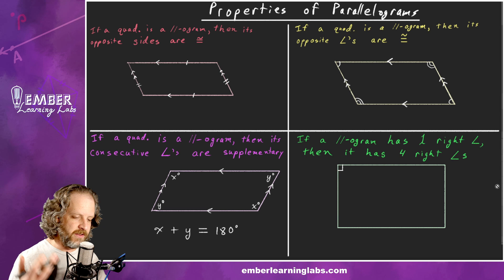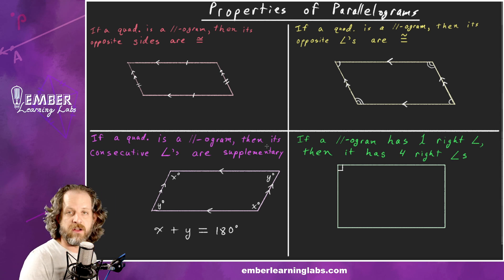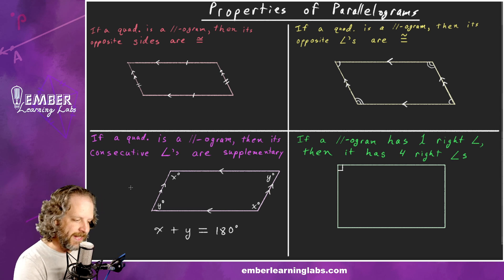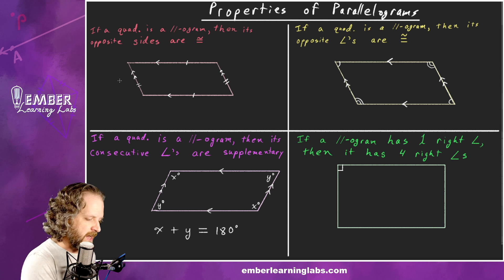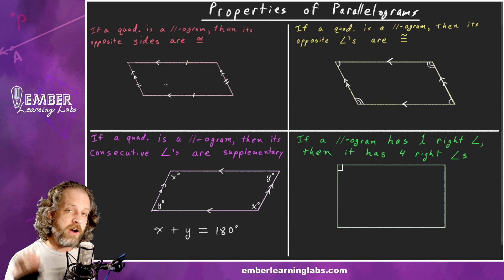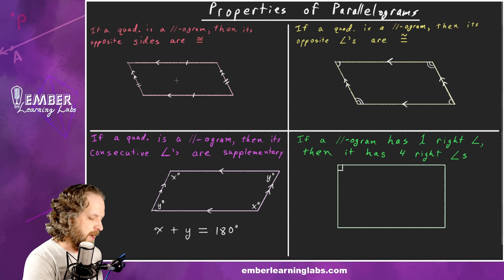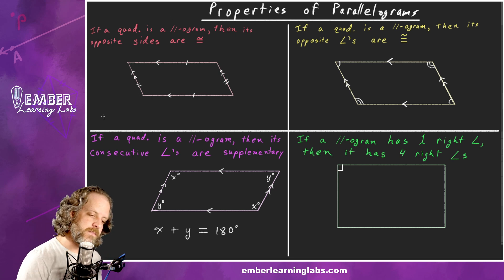Theorem 1: If a quadrilateral is a parallelogram, then its opposite sides are congruent. That's not part of the definition of a parallelogram — so if you're writing a proof and stating that opposite sides are congruent, that's a separate theorem, not the definition.